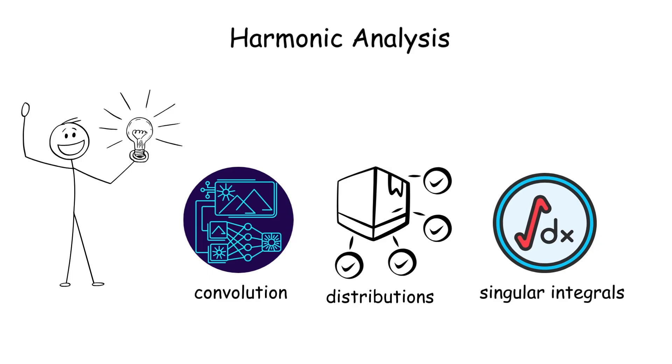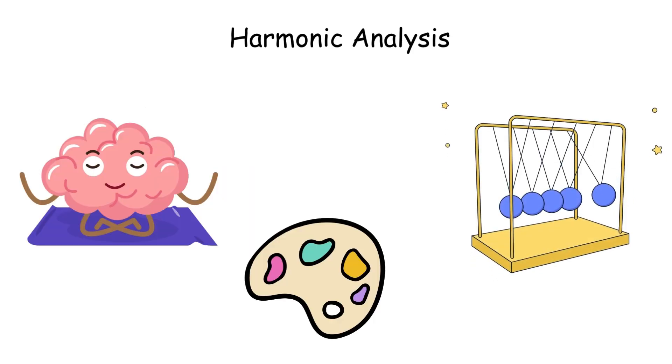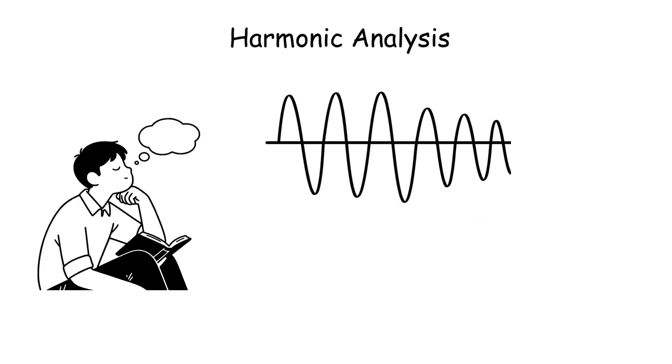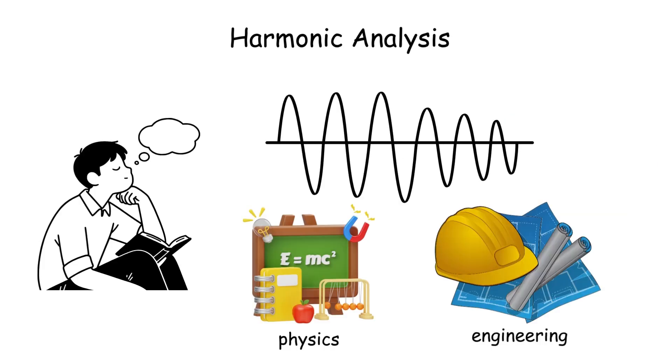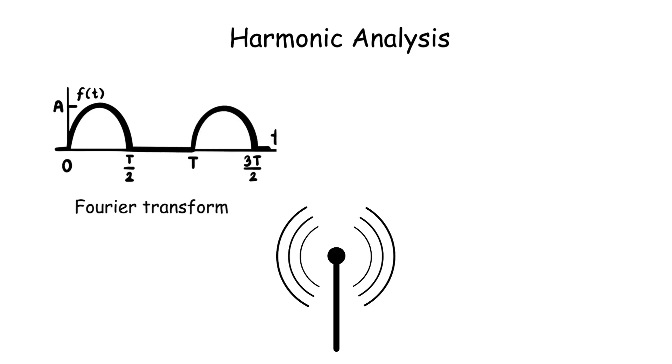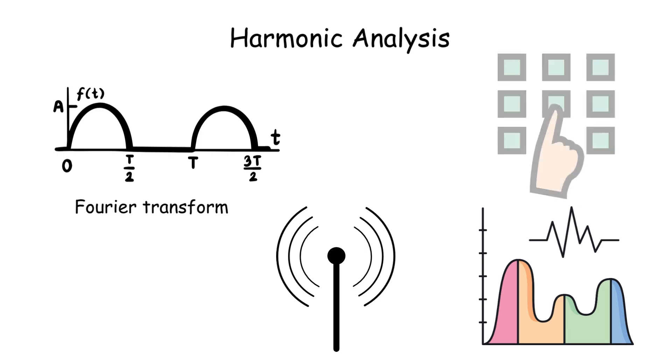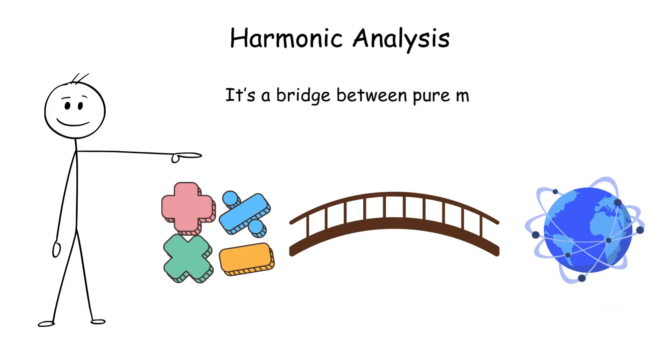Unlike real analysis, it focuses on oscillatory behavior, making it ideal for studying periodic phenomena in physics or engineering. For example, the Fourier transform converts a time domain signal into its frequency components, revealing hidden patterns. It's a bridge between pure math and real-world signals, with a rhythm all its own.